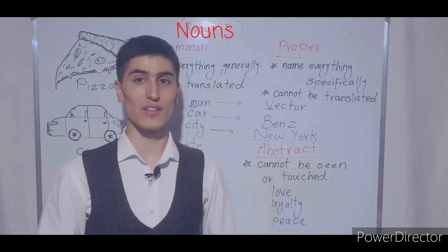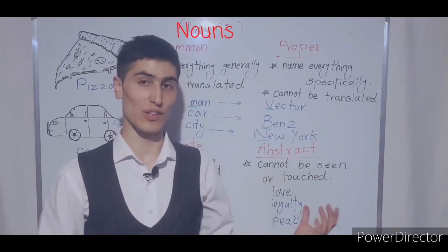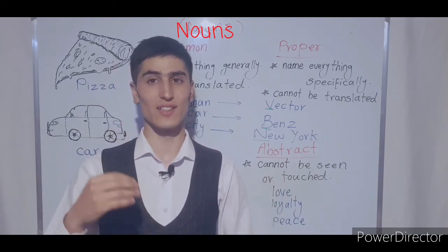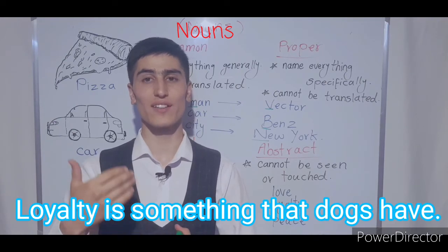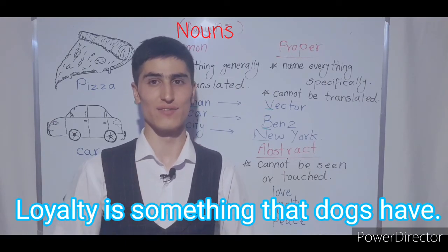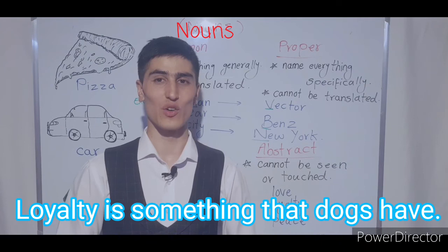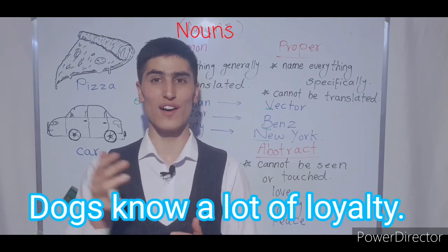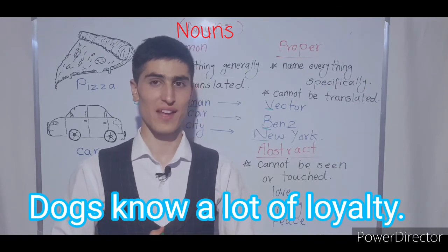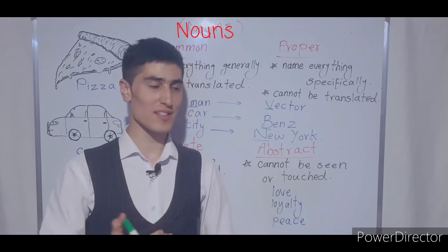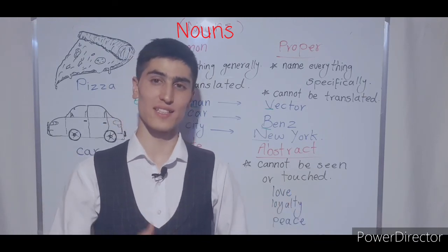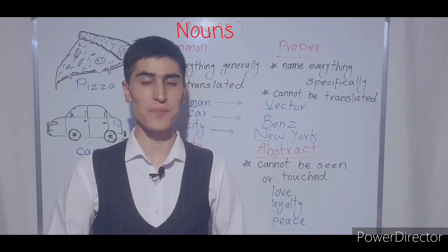Another example: 'Loyalty is something that dogs have,' or 'Dogs know a lot of loyalty.' In those examples, 'loyalty' is a noun and it is an abstract noun.